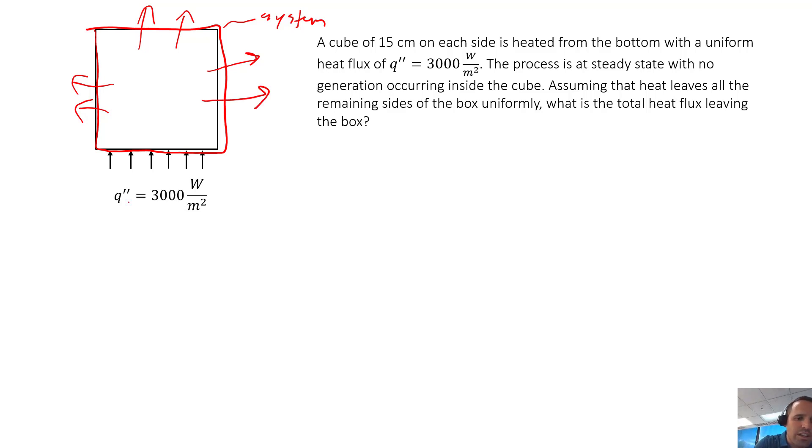I'm going to call this in term Q double prime in and I'm going to call what's leaving Q double prime out. We want to find what's going out. After we define our system and figure out how energy is getting in and out, we will do our energy balance. Remember this is accumulation, and then we have in, out, and generation, which could also be consumption.